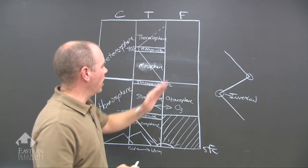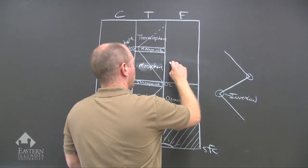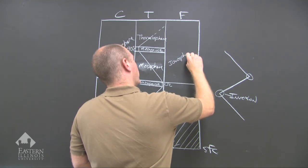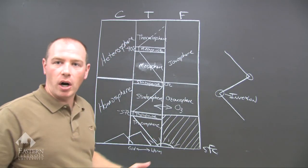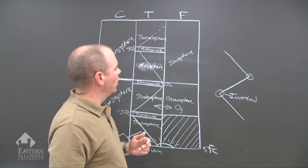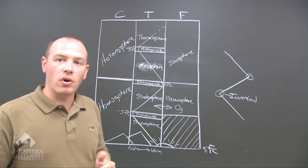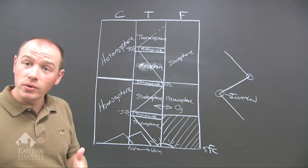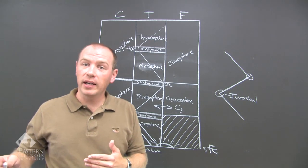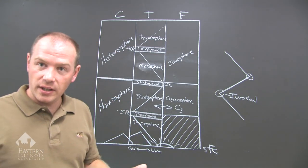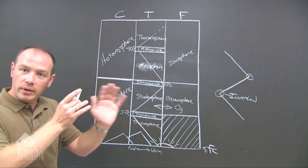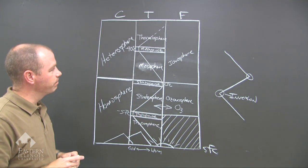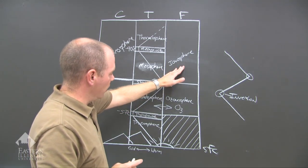And then we have the ionosphere, which deals with the electrical charge of the atmosphere. Here you can see the aurora borealis — the northern lights — near the poles. Sometimes if you're in the high latitudes, you can see them in winter as green and red ribbons across the night sky. That's the ionosphere.